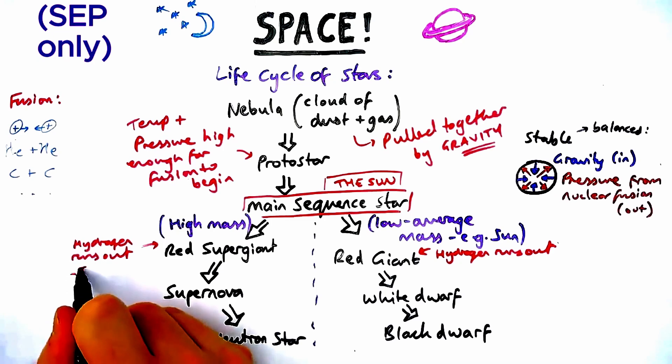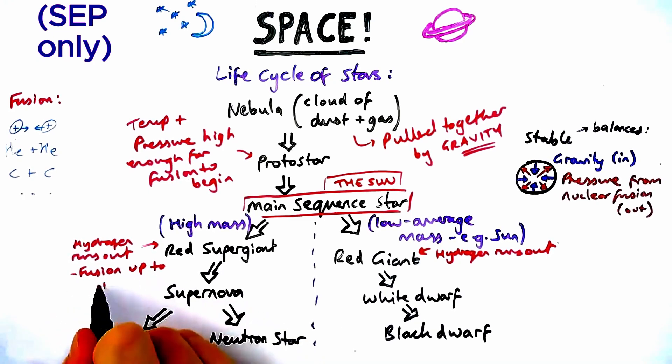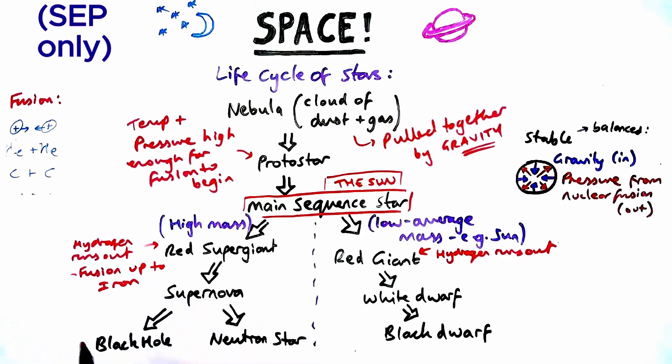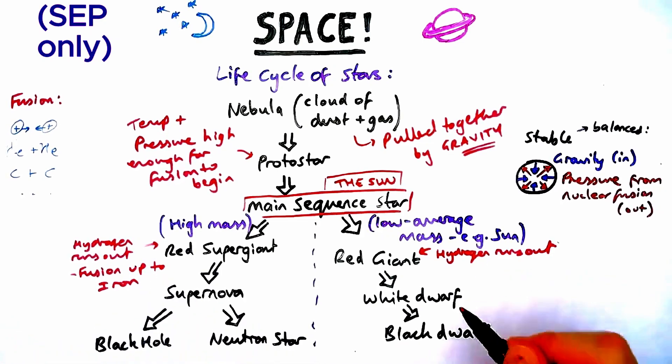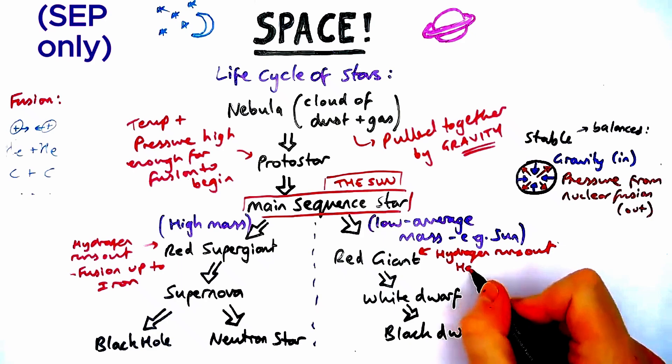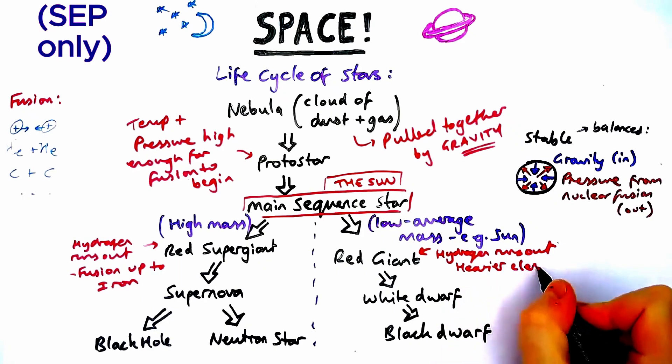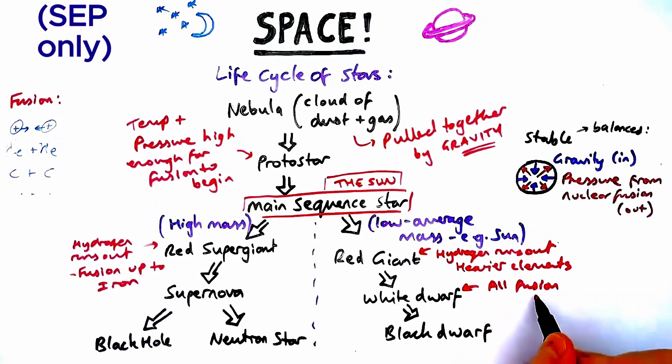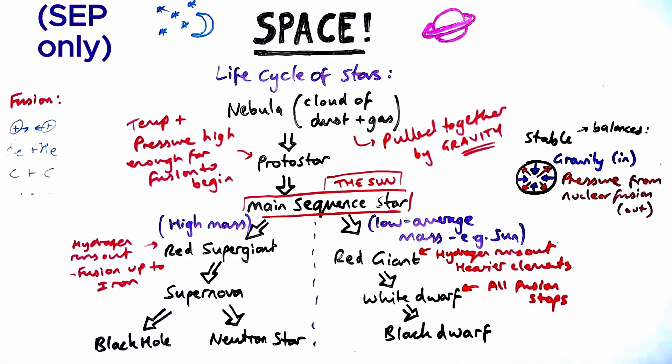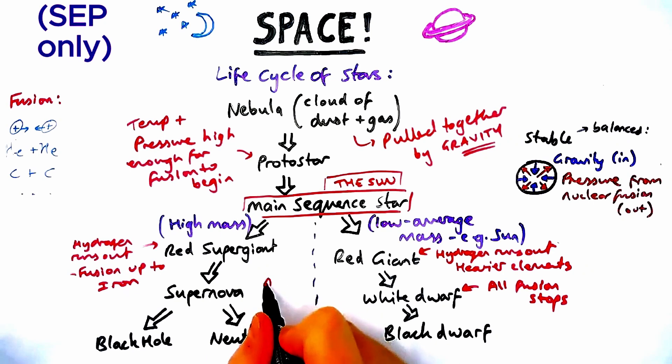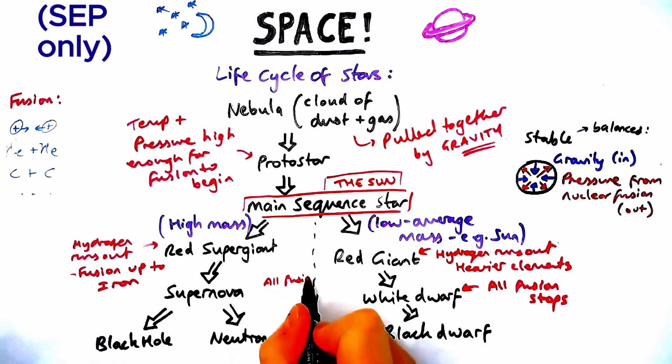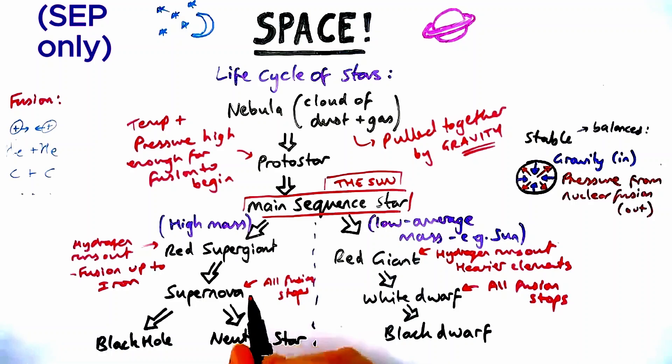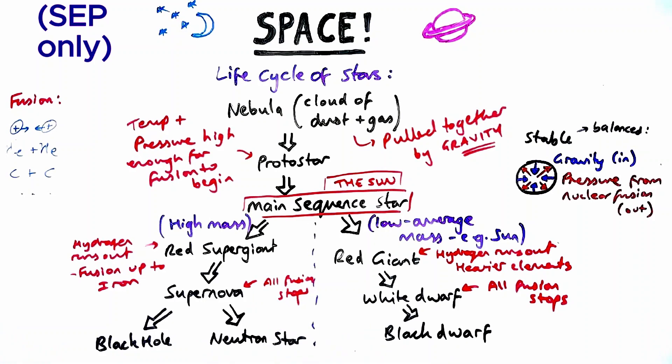In the red supergiant phase, this happens to elements all the way up to iron, which is atomic number 29. In a red giant like our sun, you get heavier elements but won't get up to iron. After this point, all fusion stops at a certain point for a low to average mass star, then it shrinks back down, becomes a white dwarf, then even that radiation ceases and it becomes a black dwarf.